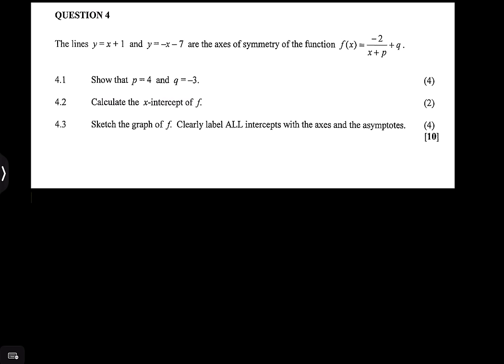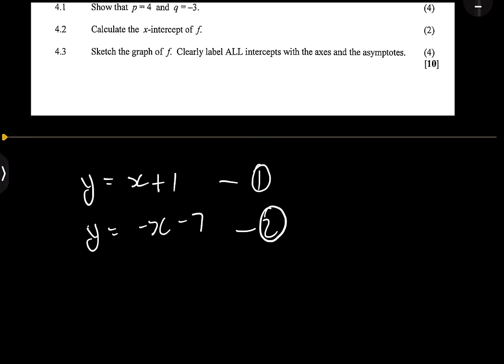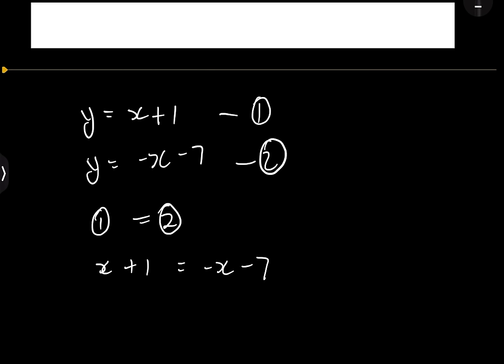In this case, first of all, show that p = 4 and q = -3 — so essentially they're saying identify your asymptotes. We're going to say we know we've got y = x + 1 as equation one, and y = -x - 7 as equation two. We know that equation one should equal equation two because this is where they meet.